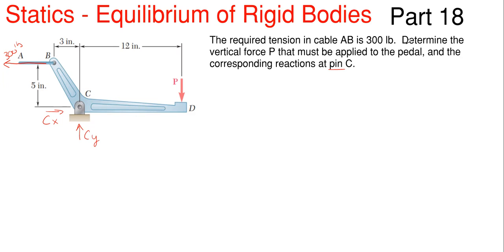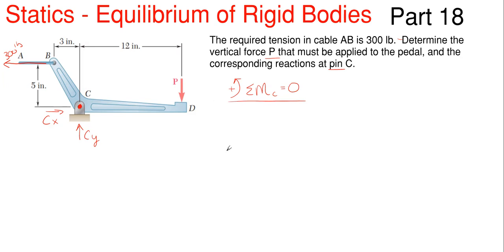We're going to work on the first part: determine the vertical force P such that the tension in cable AB is 300 pounds. To do that, I'm going to sum moments at pin C. When I sum moments at C, Cx and Cy drop out of my equation, leaving P as my only unknown. I'm going to take counterclockwise as positive, sum moments about point C, and everything needs to be in equilibrium, so all moments equal zero.